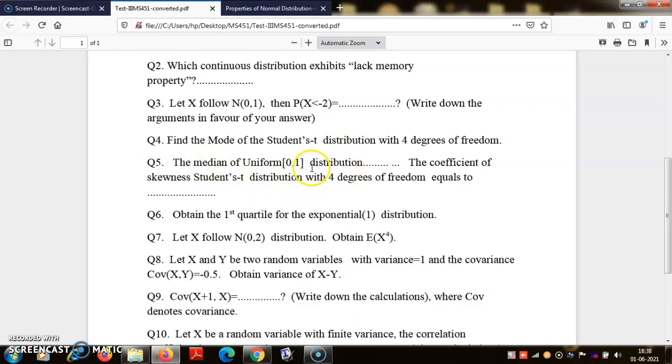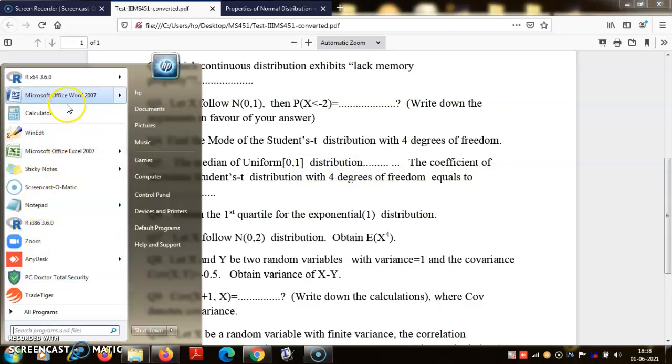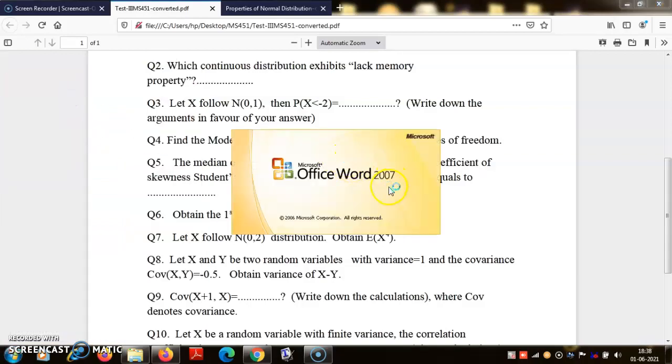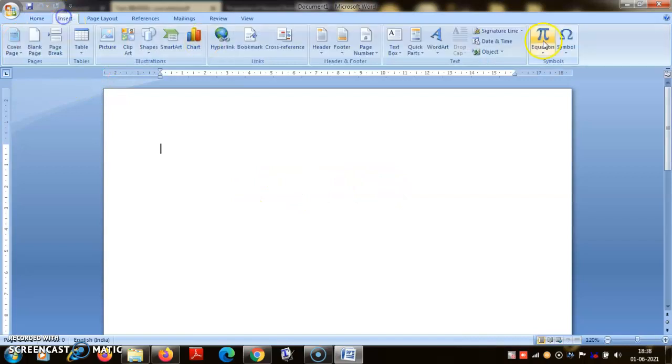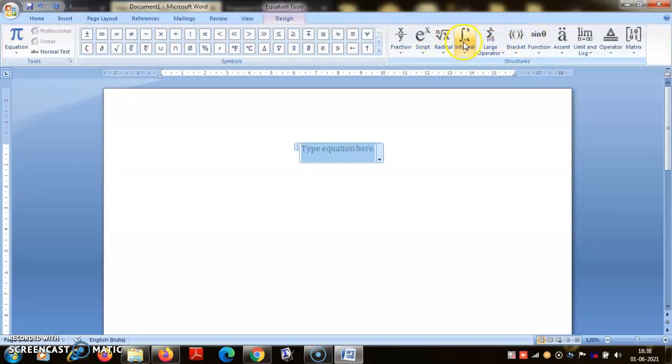The median of the uniform distribution - everybody seems to have gotten this question one part or the other wrong. So this was very simple actually. Median means what? Let me calculate. If you remember, the median for a continuous distribution means that you take the integral - so minus infinity to Y, f(t)dt, or I say integral f(t)dt is equal to 0.5.